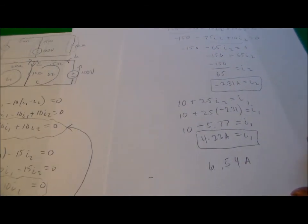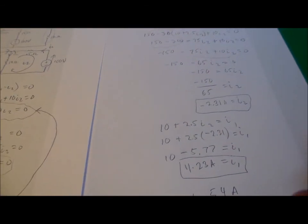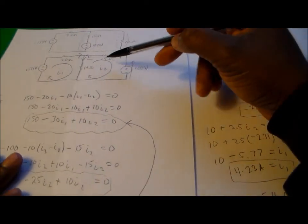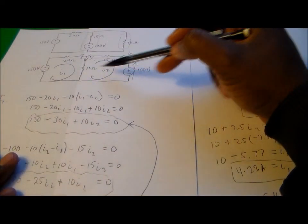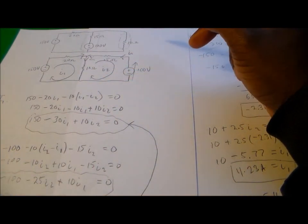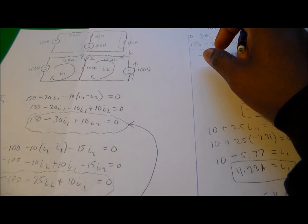So we've successfully found all the currents going through each of the components. That was a demonstration of how to use Kirchhoff's voltage law and mesh analysis to find the currents going through all the components in a circuit. Thank you.